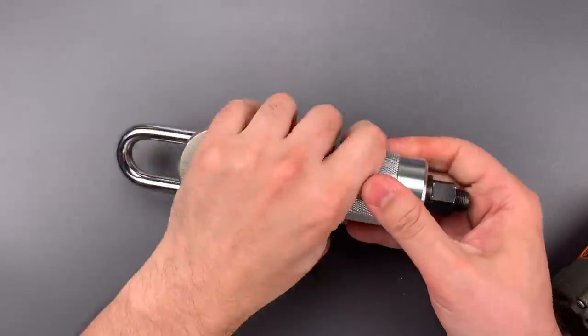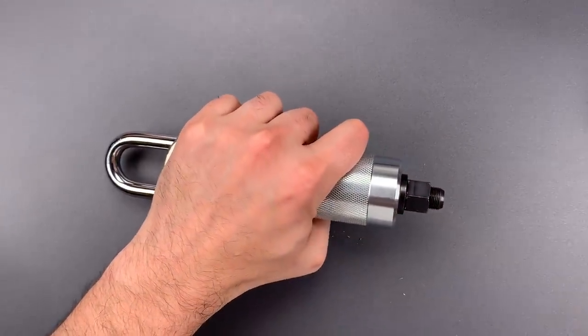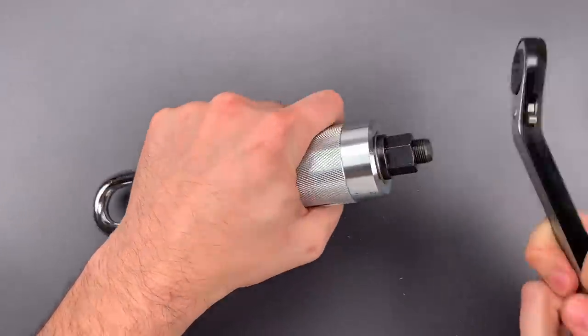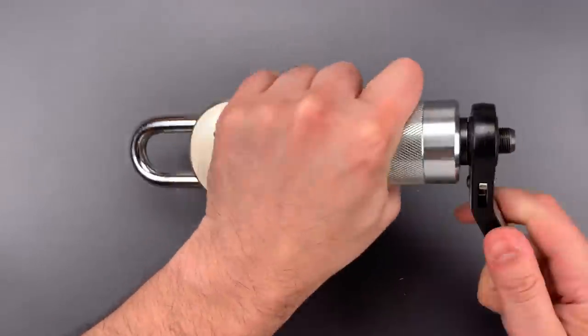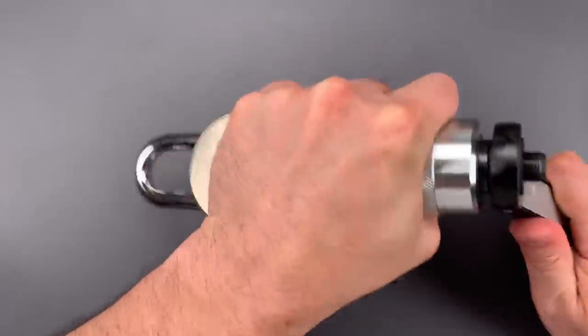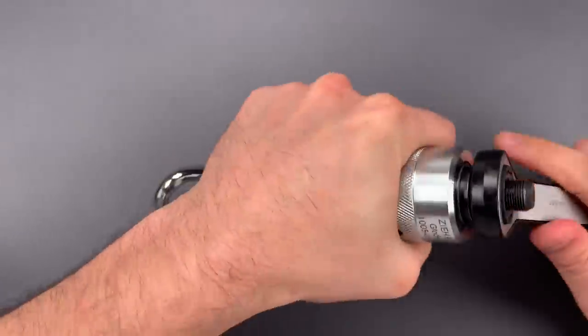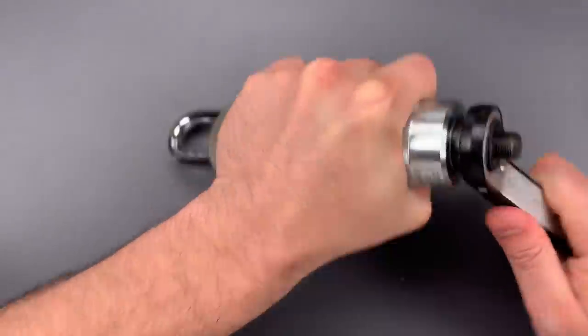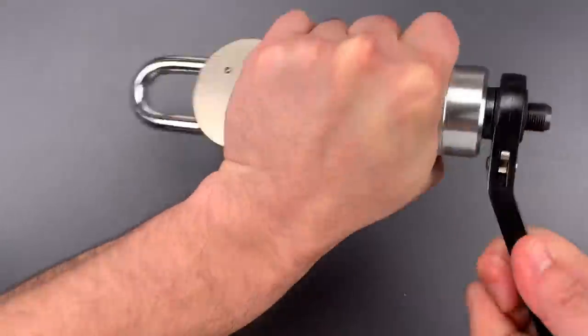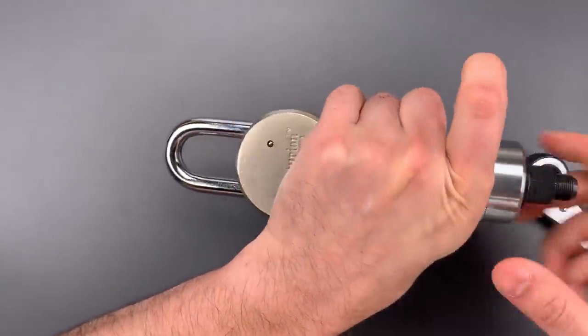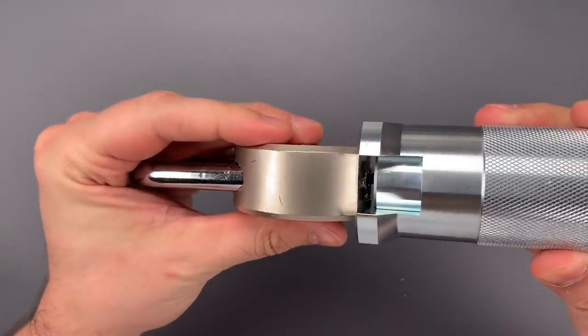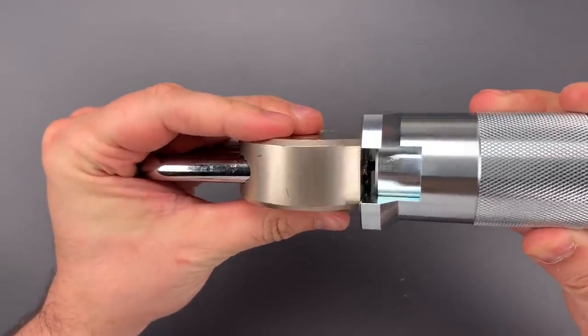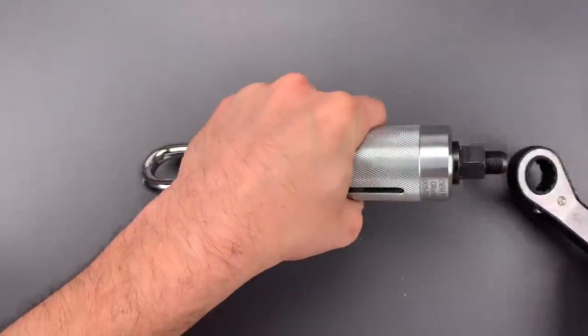And once we have all that in place, I'm going to take a 19 millimeter ratchet and tighten this down. I'll stop every few turns just to show you the progress. Okay, if we look right down there, you might be able to see that core is starting to pull out. Let's keep going.